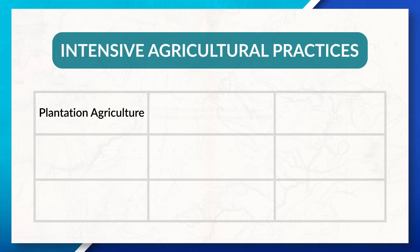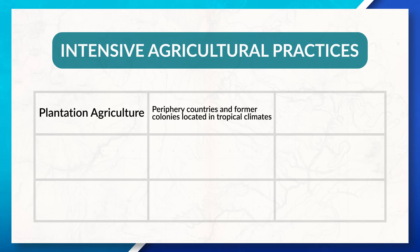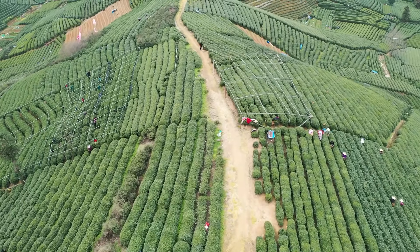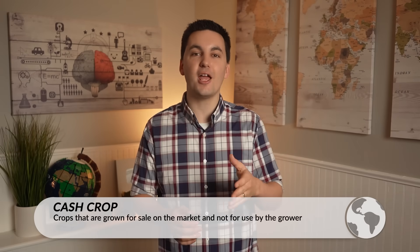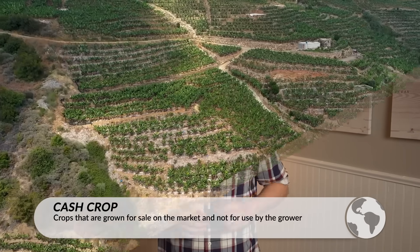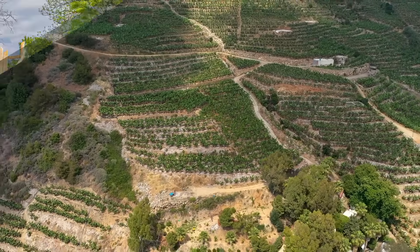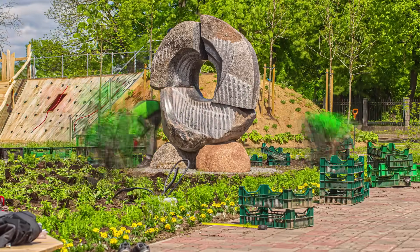Plantation agriculture is traditionally located in periphery countries and former colonies in tropical climates that have longer growing seasons. Labor in these areas is often cheap, which reduces the cost of production. Many of the crops grown on plantations are cash crops — crops grown for sale on the market and not used by the grower. Oftentimes, farmers in areas with less economic development grow cash crops to export to more advanced economies to generate income, which can create issues as arable land is used to export food instead of feed local people. Today, many plantations are run by companies in more economically advanced countries, with the goal of exporting food to core countries. Plantations often grow coffee, sugar, tobacco, or tea.